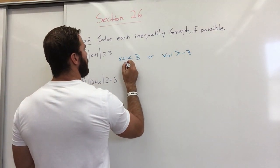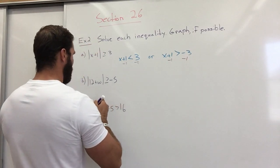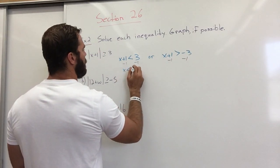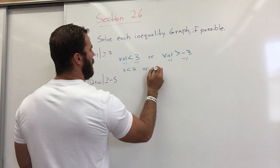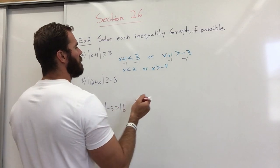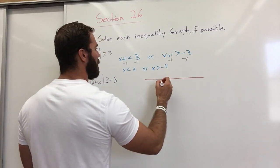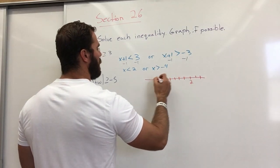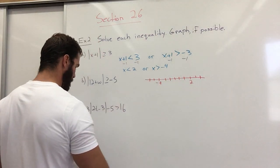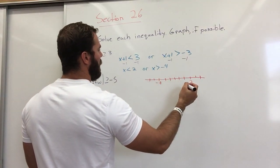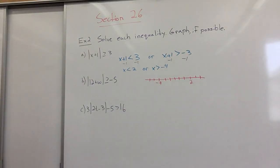I'm going to subtract 1 on both sides, so I get X is less than 2, or X is greater than negative 4. I can graph this: negative 4, negative 3, negative 2, negative 1, 0, 1, 2. So X is less than 2, or X is greater than negative 4.